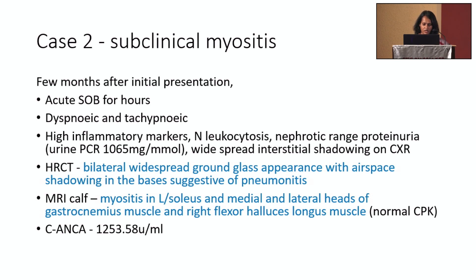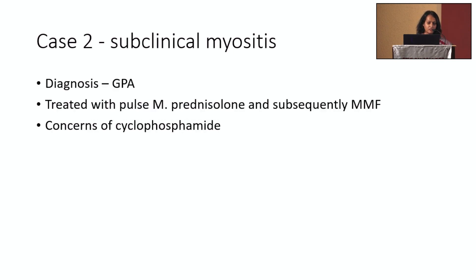Again, there was no doubt about the diagnosis. She had very high titre C-ANCA, and GPA was diagnosed and treated with methylprednisolone and mycophenolate. We didn't consider cyclophosphamide as first-line therapy because she was a young female and had concerns about receiving cyclophosphamide.